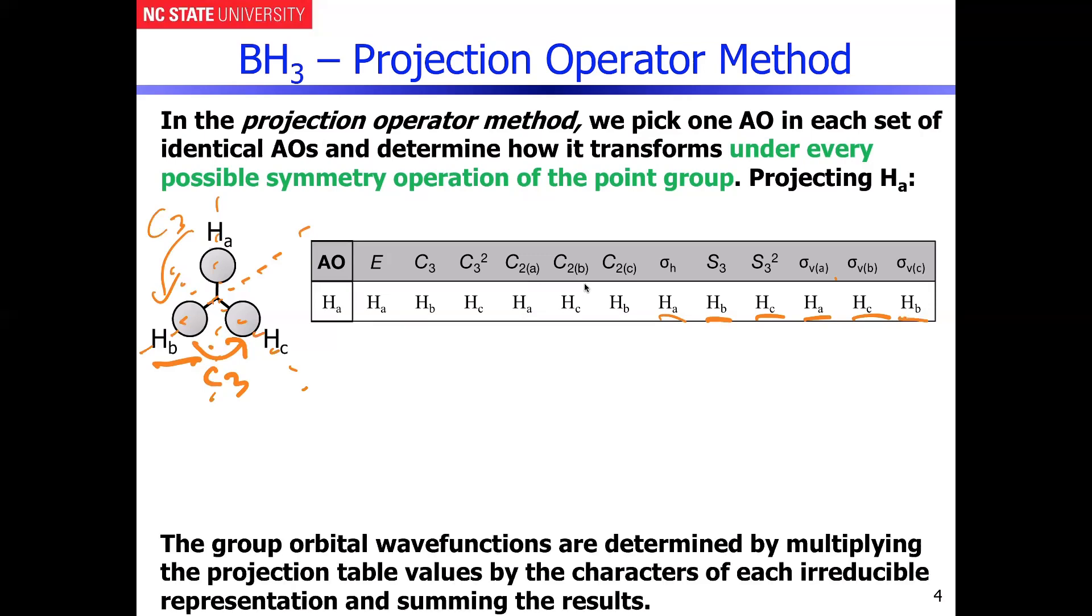So that is the full-blown projection operators applied to what happens to HA as a result of applying every single operation within the point group. So that's the hardest step in this whole process. Now, all we have to do to complete the exercise for the A1 prime EREP is now we have to take all of those projections in each of those operations. And then we just have to multiply them by the characters that are found in the EREP. And in this particular case, it's the EREP for A1 prime, and A1 prime obviously is totally symmetric. So all of those numbers are one.